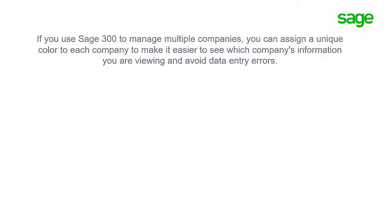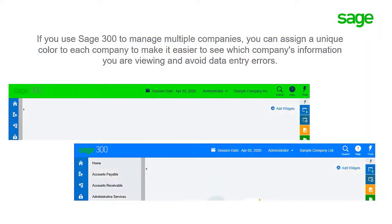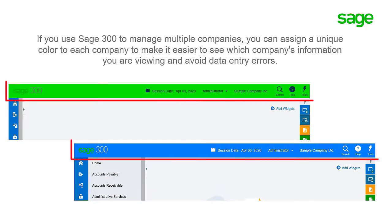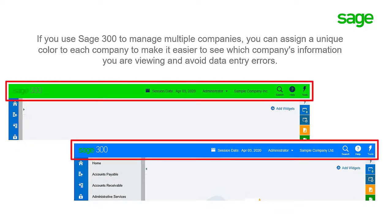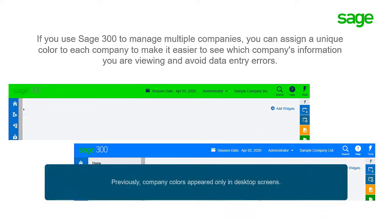If you use Sage 300 to manage multiple companies, you can assign a unique color to each company to make it easier to see which company's information you're viewing and avoid data entry errors. Previously, company colors appeared only in desktop screens. Now they also appear in web screens at the top of the Sage 300 cloud homepage and screen.